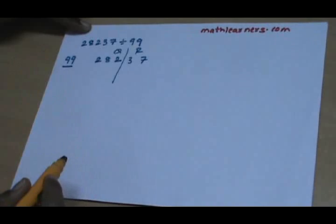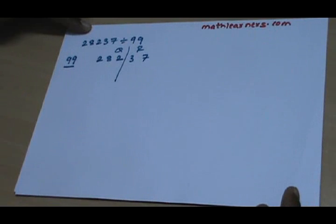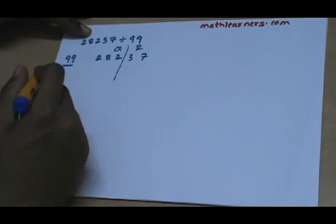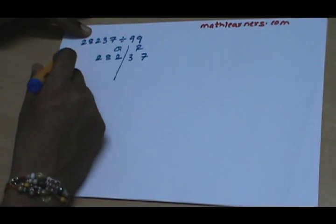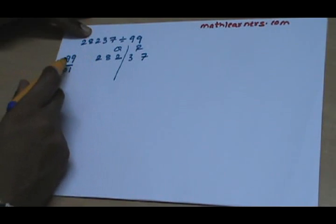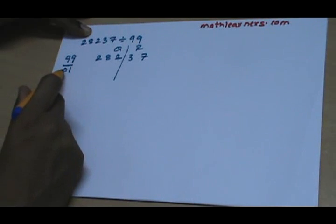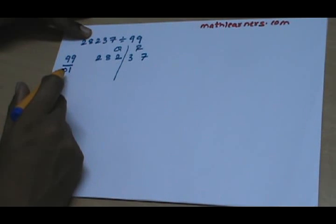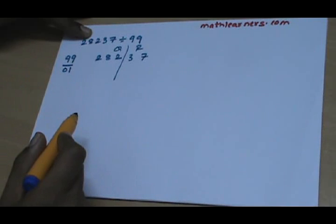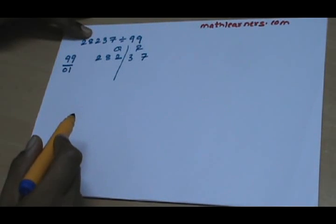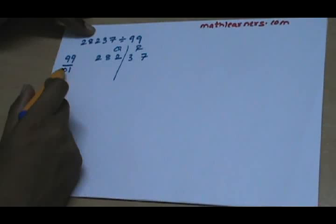The divisor is 99. As we had seen in the Nikhilam process in multiplication, it says all from 9 and last from 10, so 99 can be written as 01 — that is, 99 is 1 less than 100. And don't forget to consider the 0, as we need to have the same number of digits as the number of zeros in the base. The base here is 100, so we need exactly two digits.